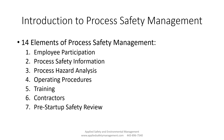Let's look at the 14 elements of process safety management. If you fall into the program, you need to implement all 14 elements. Number one: employee participation. Number two: process safety information. Number three: process hazard analysis — this is where you sit down and look at all of the hazards and how to minimize them. Number four: operating procedures — you have to have a way that people are trained to operate vessels and the process in a safe fashion.